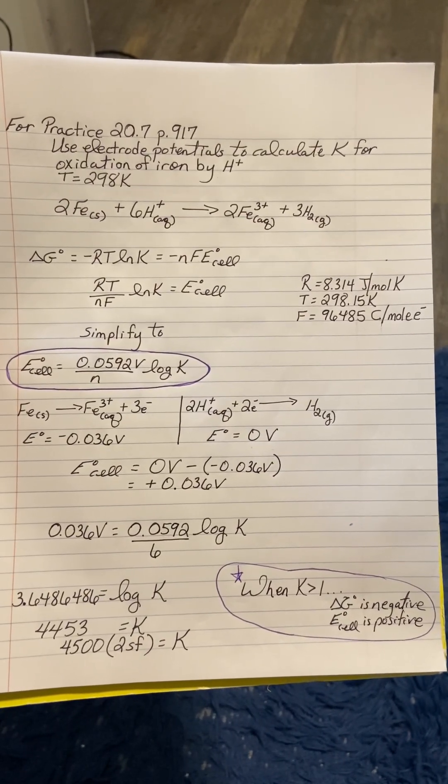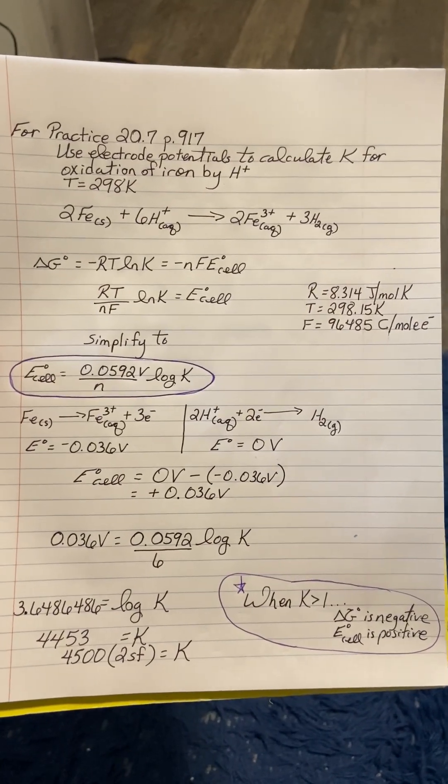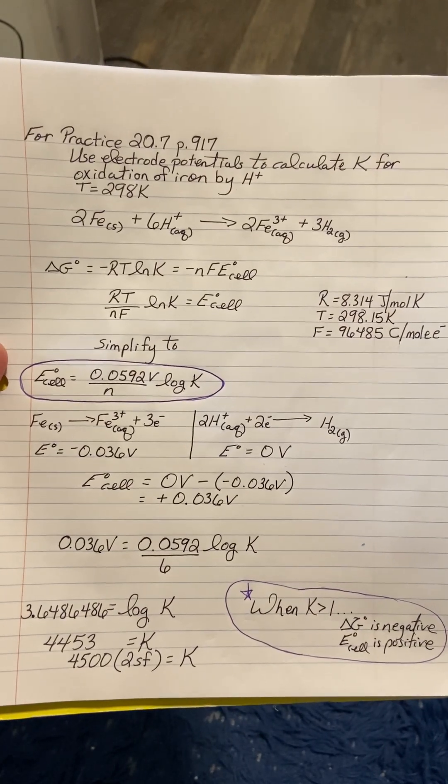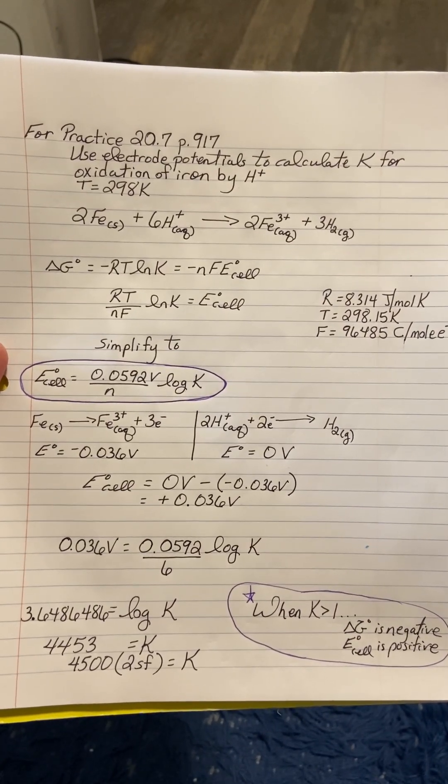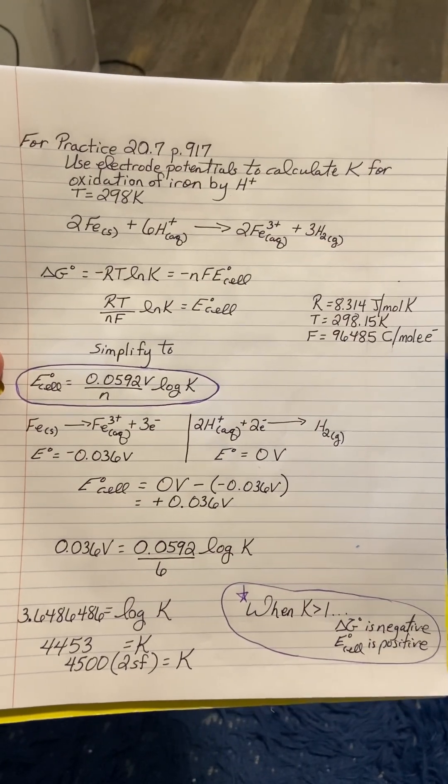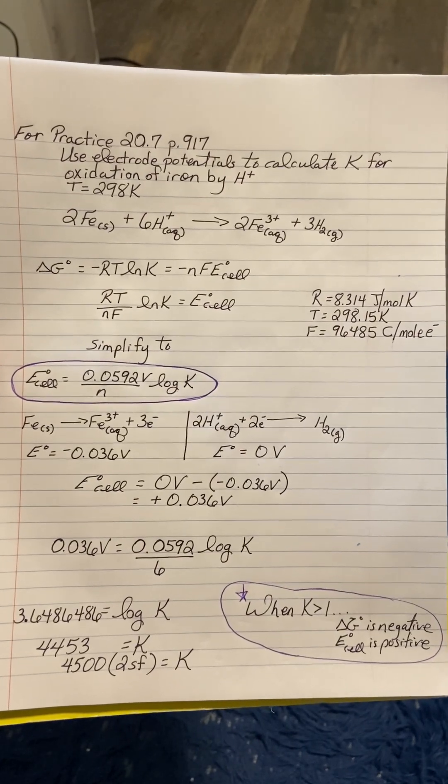Here's our reaction: 2Fe(s) + 6H+ yields 2Fe³⁺ + 3H₂. Remember spectator ions have been eliminated.